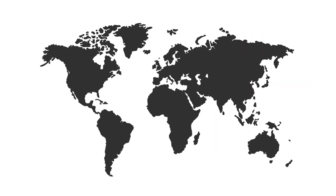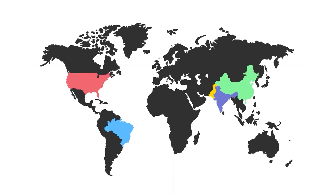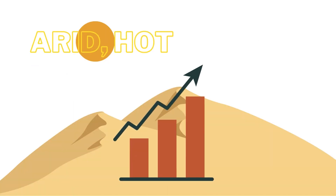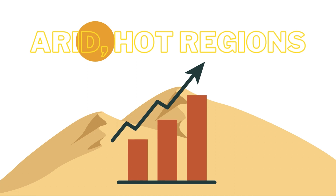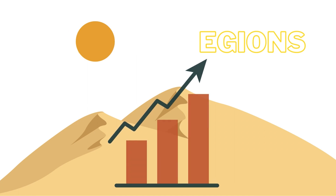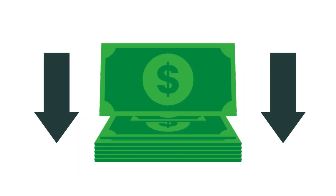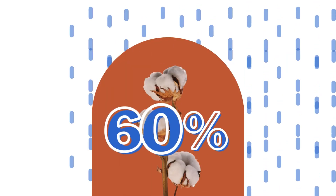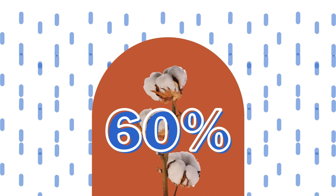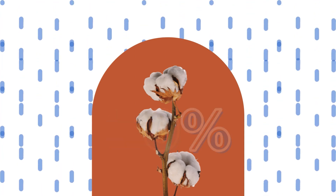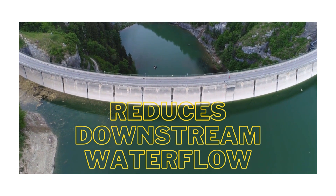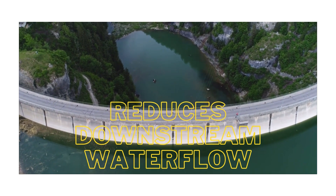Cotton is grown in more than 100 countries, with the major producers being China, USA, India, Pakistan, Brazil, and Uzbekistan. With global production of cotton increasing, many arid, hot regions of the world have to rely on irrigation systems to sustain the crop. One of the most common types is flood or furrow irrigation, which takes water from a nearby water source and directs it to water the cotton field. This is a simple and cheap technique, but it wastes a lot of water. It's estimated that 60 percent of all water used for flood or furrow irrigation doesn't even reach the plant. Furthermore, large-scale irrigation projects use dams to divert rivers, resulting in the reduction of downstream water flow.